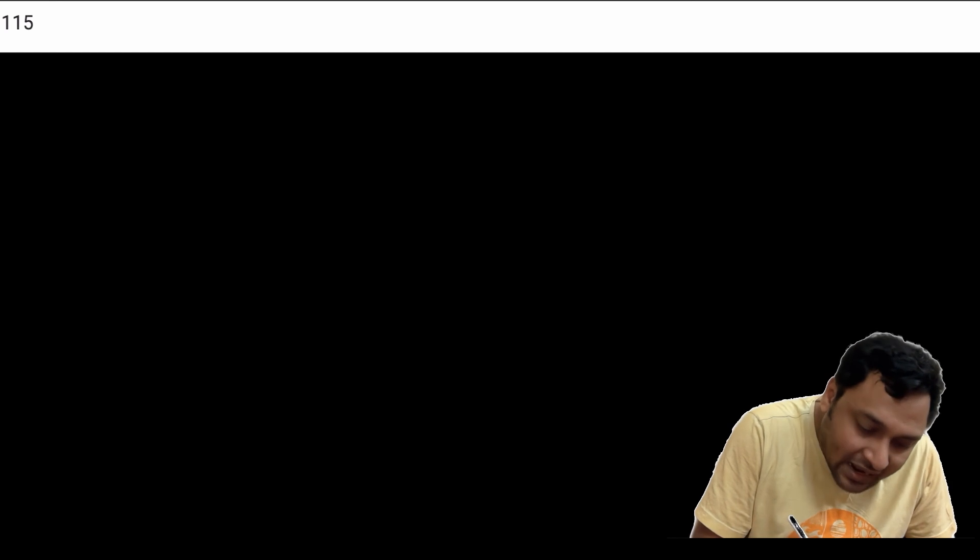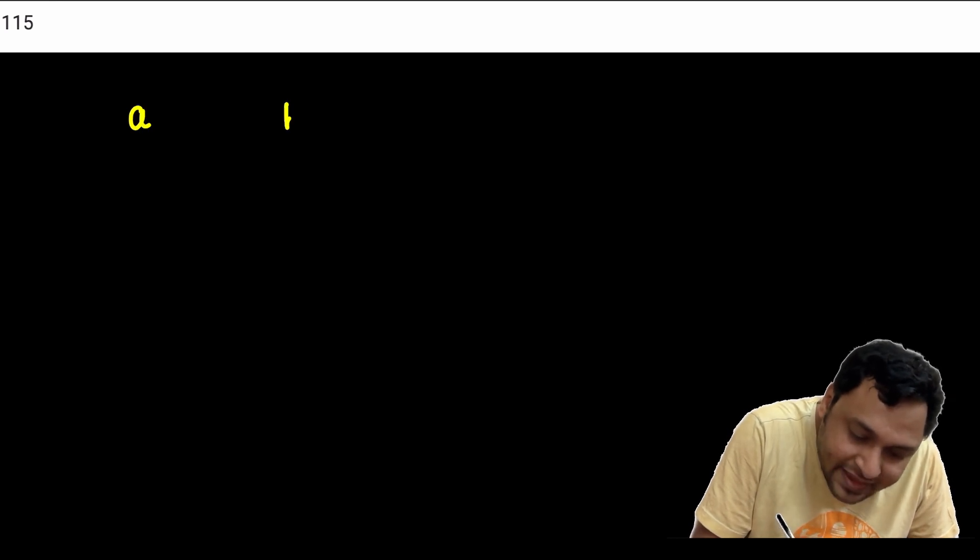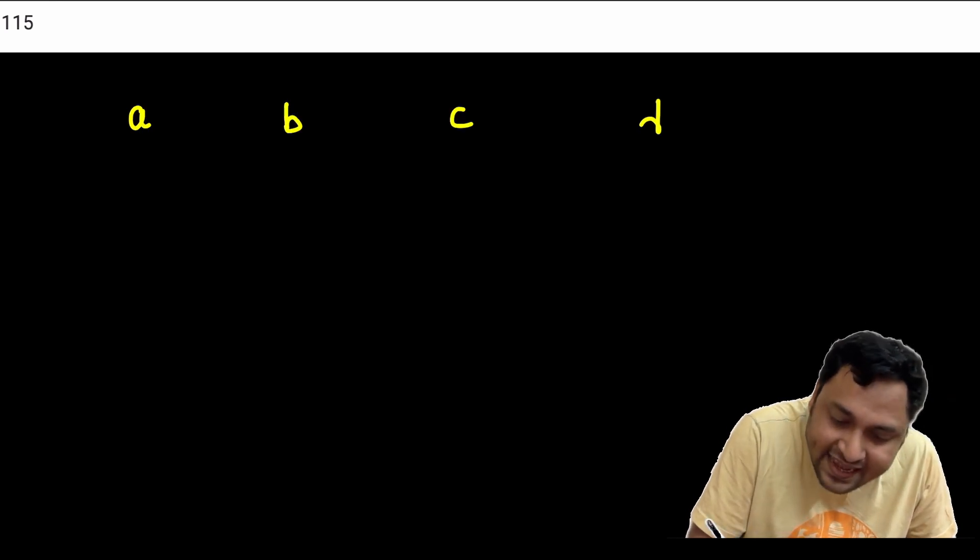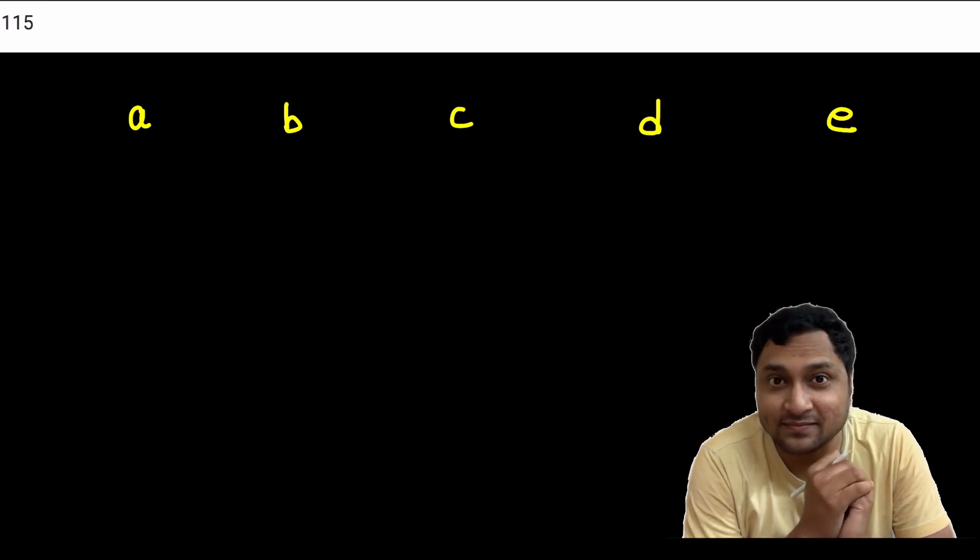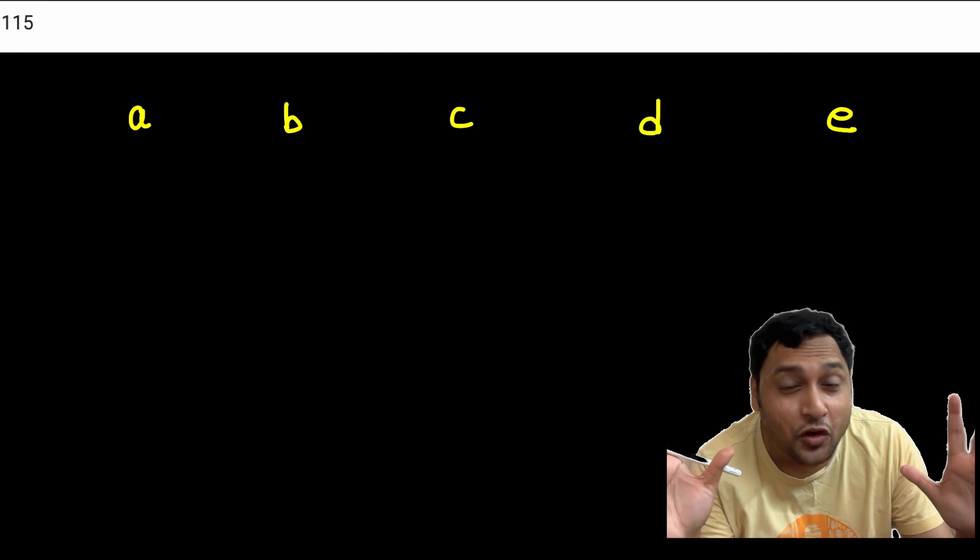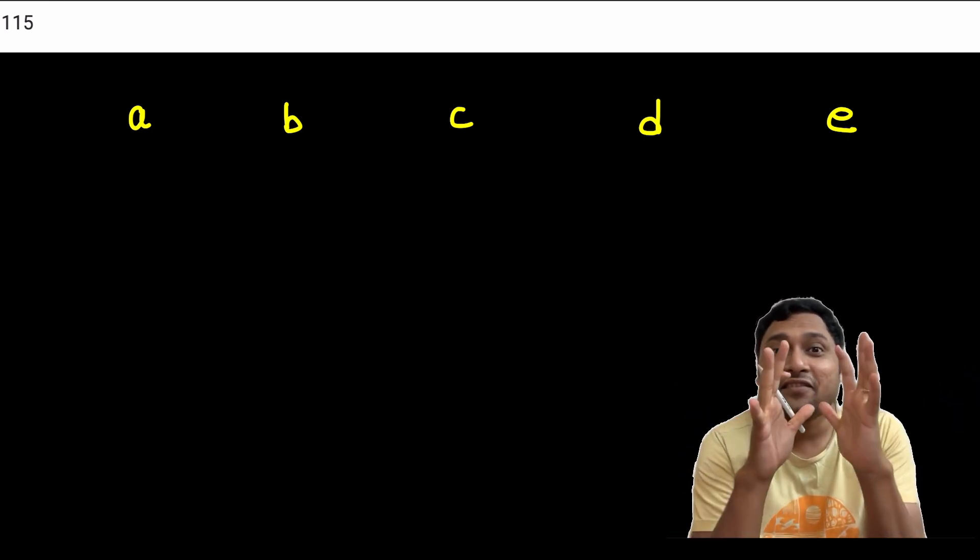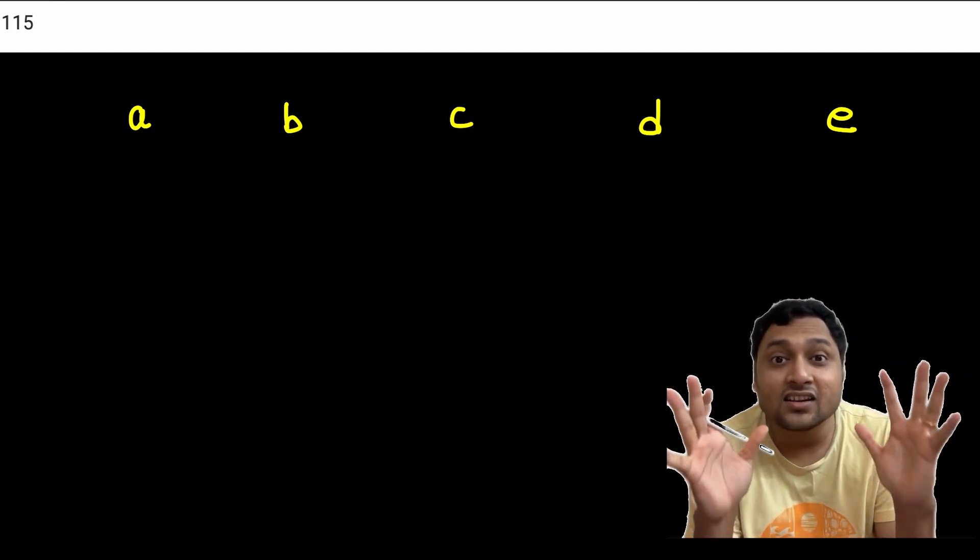So, suppose the numbers A, B, C, D and E are chosen from 1 to 10. Now, we have no control over which 5 numbers are chosen.